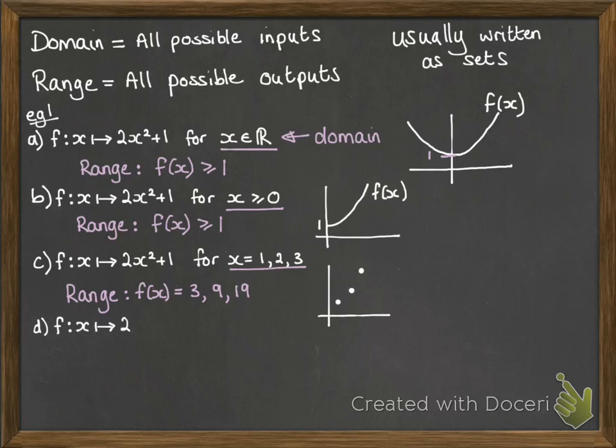On that note, we could be asked to find specific values. So f of 4, f of minus 3, just means we put those into the function and work out the answer that it would give us.